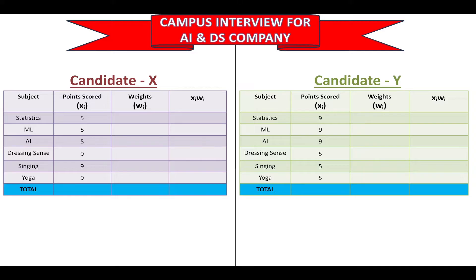So in our example, we will give maximum importance to Statistics, hence we will assign it a Weight of 6. Next we will give importance to ML and assign it a Weight of 5. Next is AI. Next is Dressing Sense. We will give more importance to Yoga than Singing, hence we will assign the next weight to Yoga that is 2 and finally we will assign 1 to Singing. So the summation of weights Wi we get as 21.